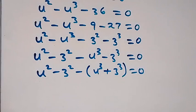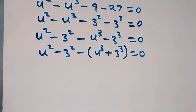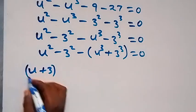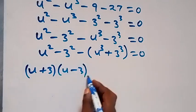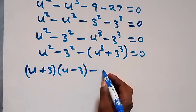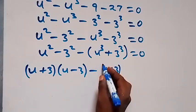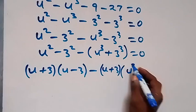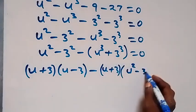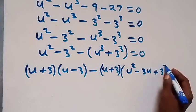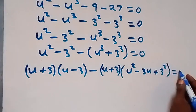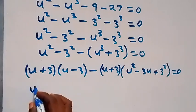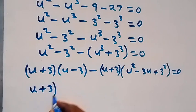From here we write this as (u squared minus 3 squared) minus (u cubed plus 3 cubed) equals zero. Applying the difference of two squares identity gives us (u plus 3)(u minus 3), and for the sum of cubes we have (u plus 3)(u squared minus 3u plus 9), so we factor out the common (u plus 3).